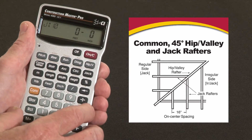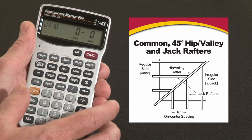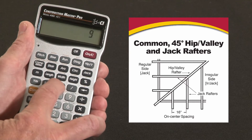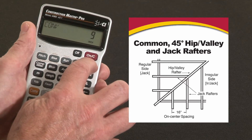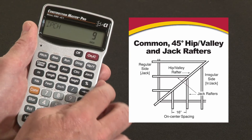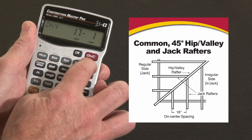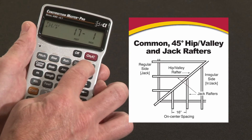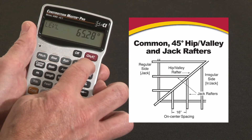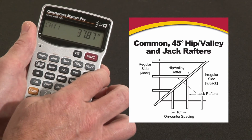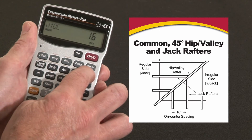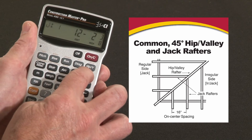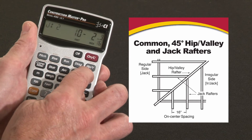Now let's say that we have a dual pitch roof and the second pitch is a 9 inch pitch. What I do is hit Convert, and over the hip and valley key it says irregular pitch, so I enter it that way. Now I can hit the hip and valley key and it'll give me the irregular hip and valley length — that would be 17 foot 1. It'll give me the cut angles. Of course it's not going to be 45 degrees — the cheek cut's 37.87 degrees. Now I can also solve for all the jack rafters with the same on-center spacing, the increment of change, and all the regular jack rafter lengths all the way down to the corner.